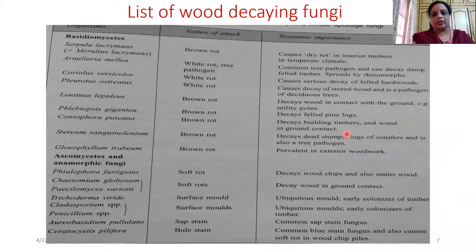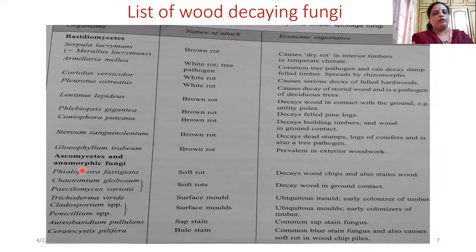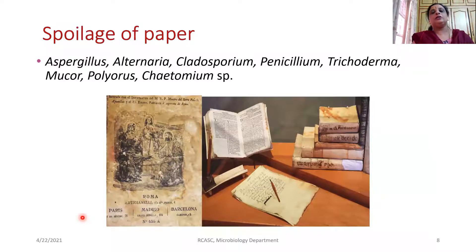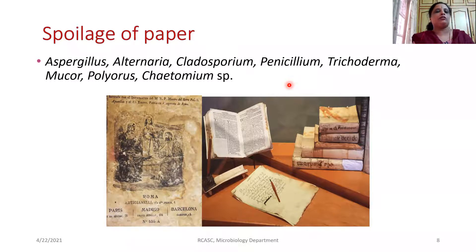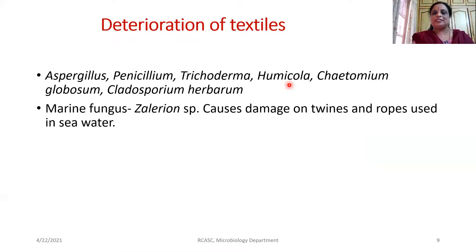Various wood decaying fungi have been listed out, where dominantly it is the Basidiomycetes fungi which plays a major role in decomposing wood, and few of the Ascomycetes fungi and molds also play an important role. We also studied that certain fungi play a major role in the spoilage of paper, especially the molds and anamorphic fungi belonging to the subdivision Deuteromycotina, which play a major role in spoilage of paper. We also studied about the deterioration of textiles.